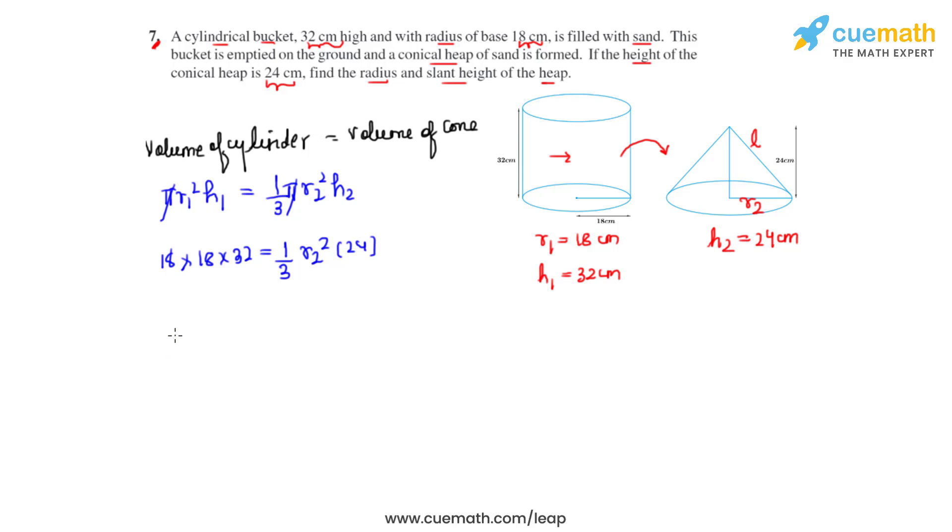So on rearranging we get it as r2² equals 18 times 18 times 32 times 3, and this whole is divided by 24. So 3 eights are 24, and 8 fours are 32.